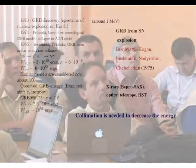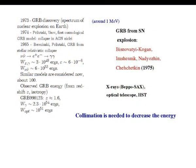Gamma-ray bursts were discovered — first publication in 1973 — and many models appeared, more than 100, mainly connected with galactic origin of the bursts: accretion, explosions, and so on. In this paper we summarized several models, including the model where gamma-ray bursts were connected with supernova explosions due to neutrino flux transforming into gamma radiation.